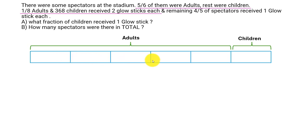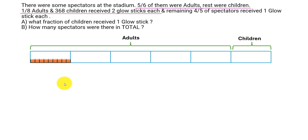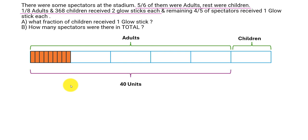We need to be able to divide these five units in a way so that we can get one-eighth of it. One option is to find the LCM of 8 and 5 — that is, divide each of the five parts into eight smaller units. So in total we have five times eight, which is 40. And one-eighth of 40 would be five units. That is what we are trying to achieve.